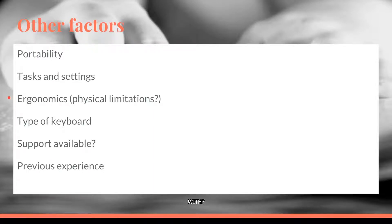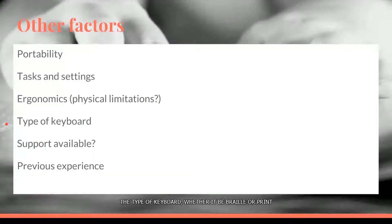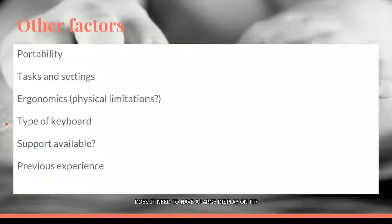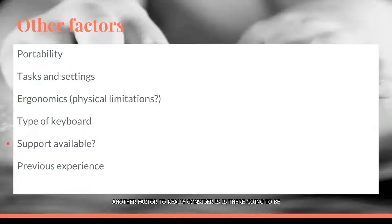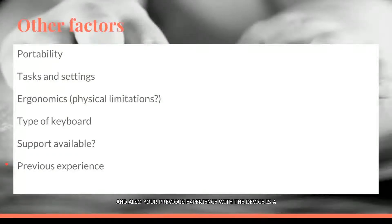Ergonomics is important too — is the keyboard on the braille display something the student is comfortable with? They may want to visit Easterseals and try the feel of different keyboards on different displays. Easterseals in Indianapolis has a great lab where you can check out different things. Consider whether a Bluetooth keyboard is needed with a tablet, or if the device needs a large display. Another key factor: is there going to be support with this device? Ask whoever you're purchasing from how much support you can count on, and consider your previous experience with the device.